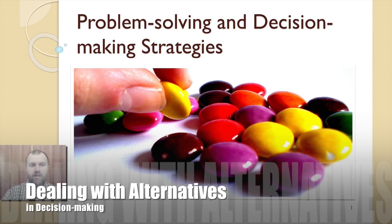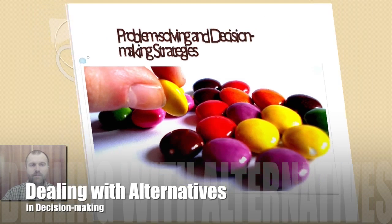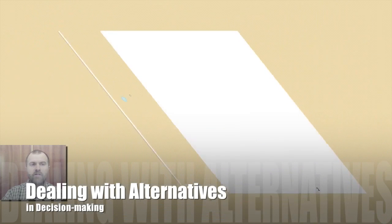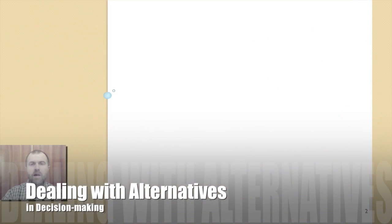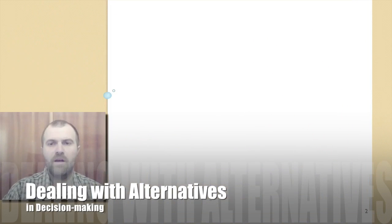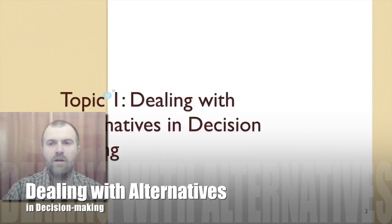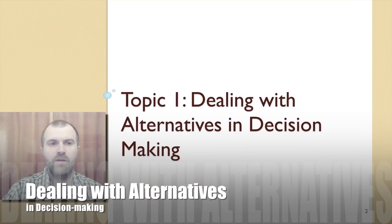The basic stages are: define the situation, generate alternatives, information gathering, selection and action. A decision-making model describes the method a team will use to make decisions.